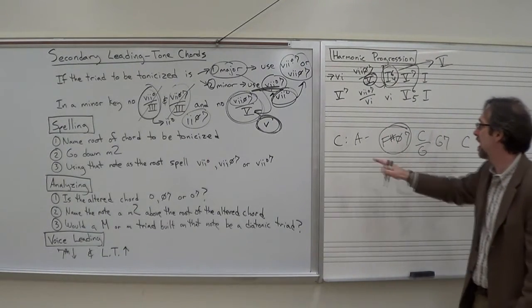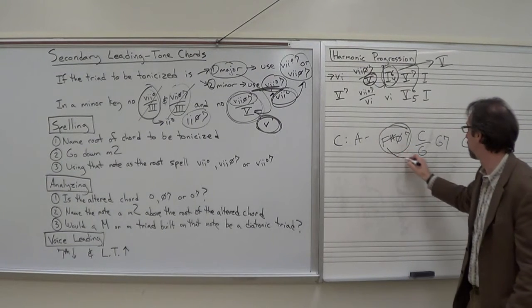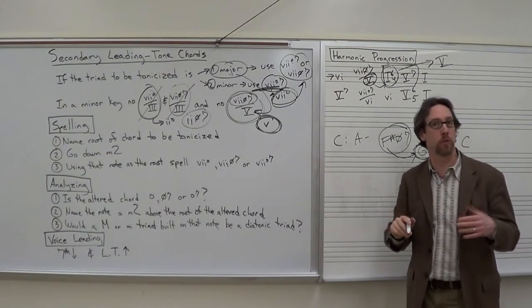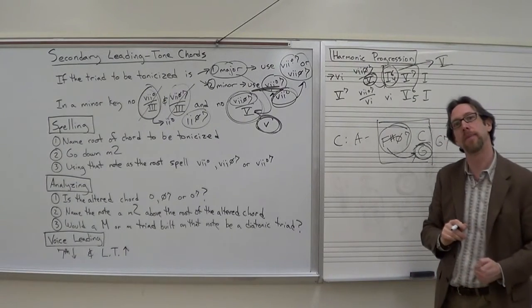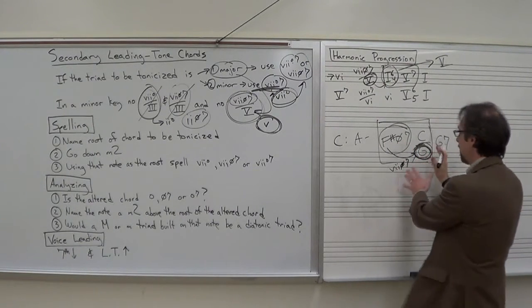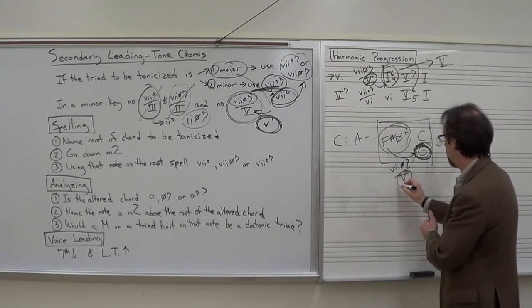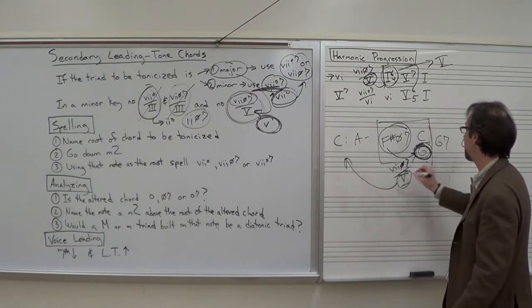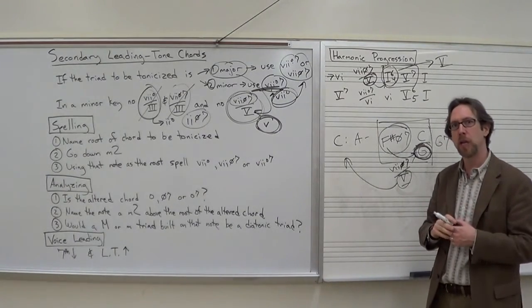Right there, F sharp half diminished 7 in the key of C major is a 7 half diminished 7 of 5, and you can see that F sharp goes right there to the G. In a certain sense, when we're talking about secondary functions, whether they're secondary dominants or secondary leading tone chords, it's almost like we are temporarily in a new key. We are temporarily in the key of G. So this is our 7 half diminished 7 in the key of G. That's what we mean when we put the slash 5, it's telling us in this key. We're not saying G here, we're saying 5, which happens to relate back to our home key, C major.